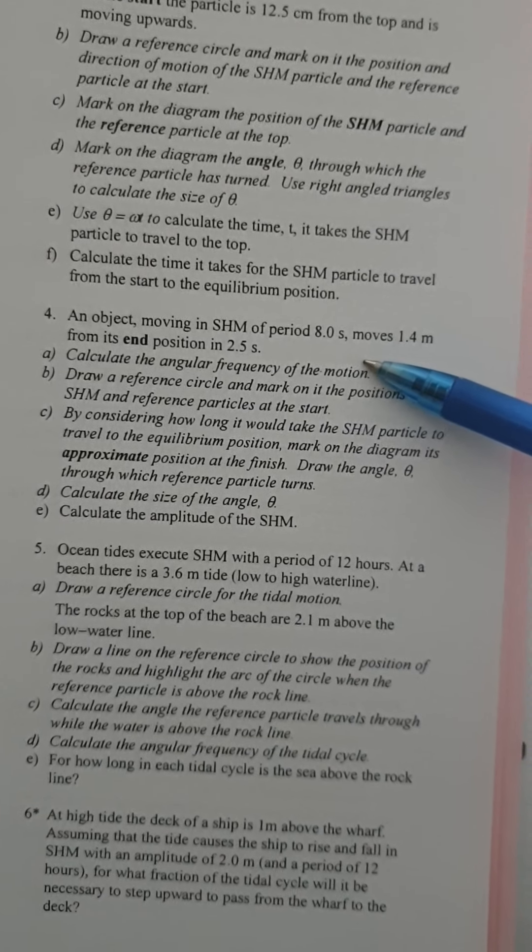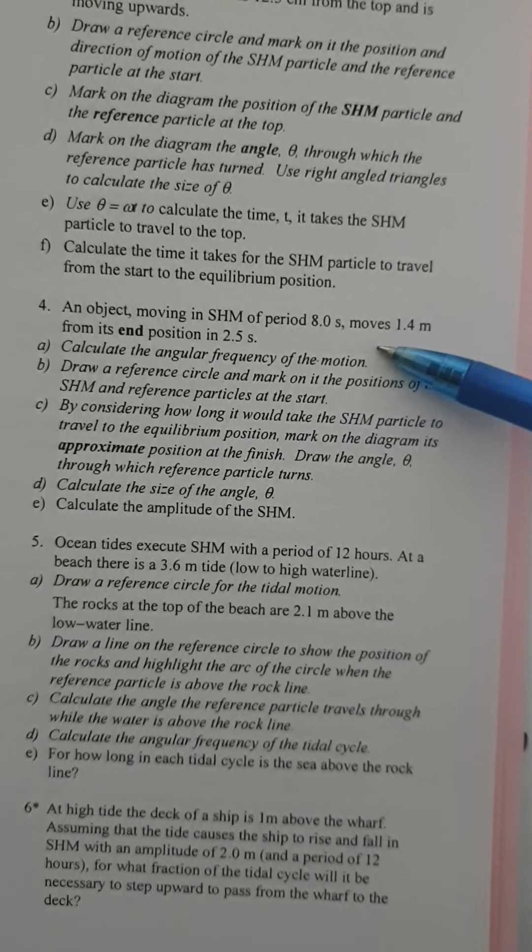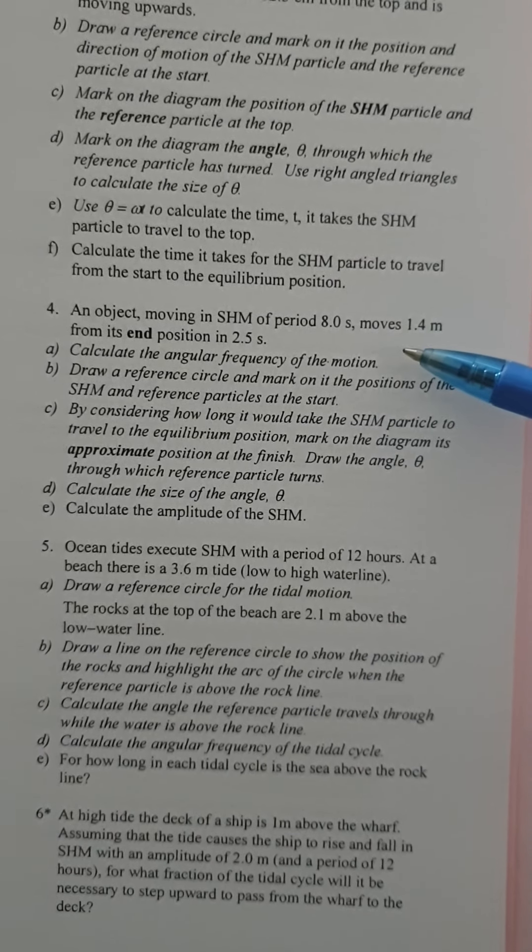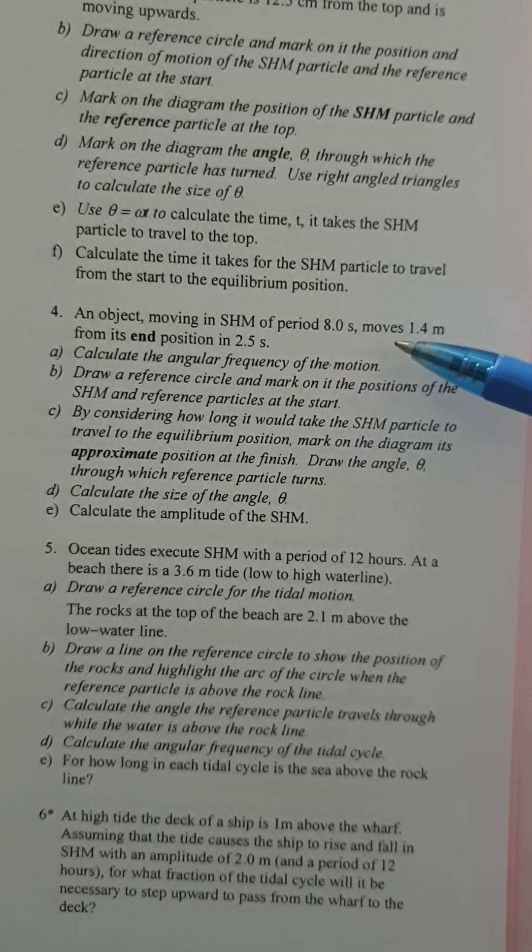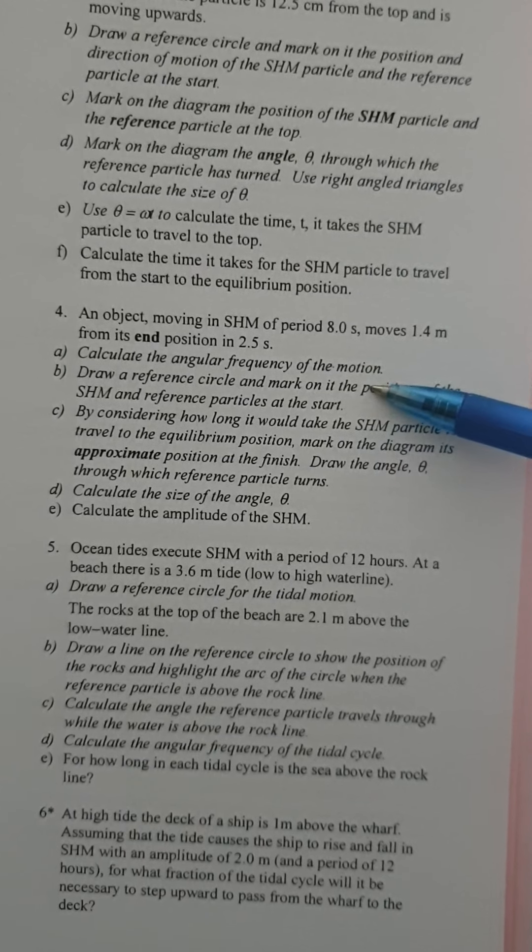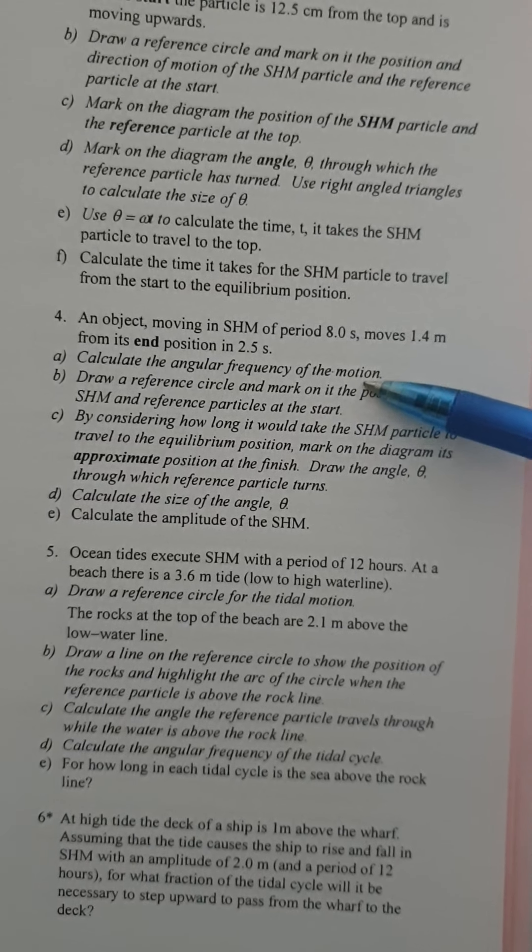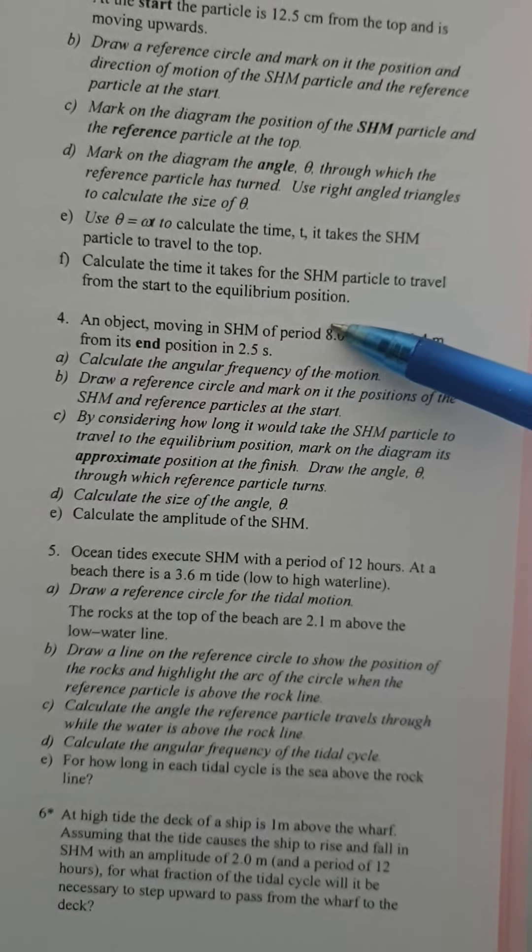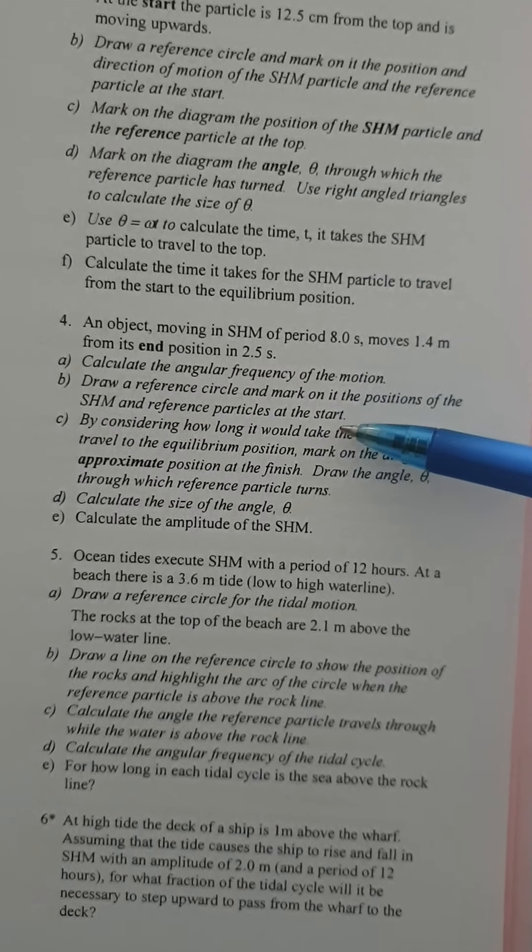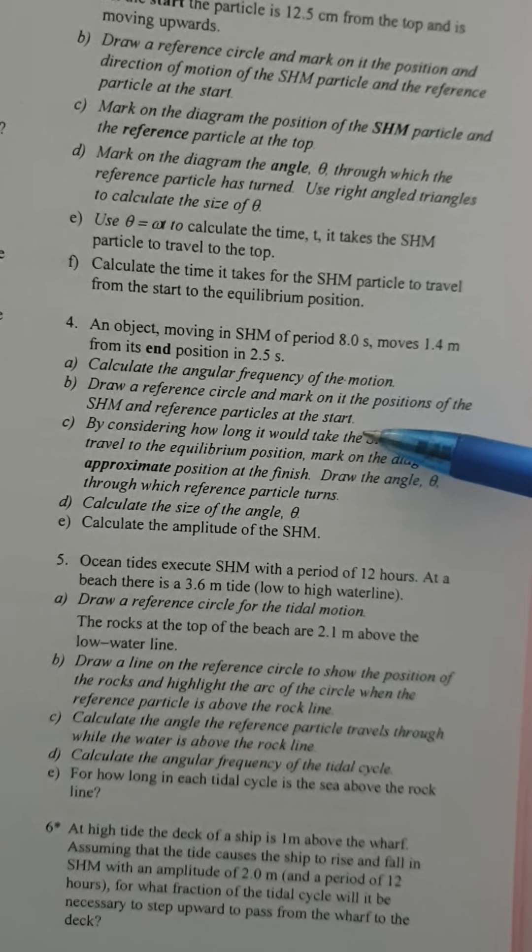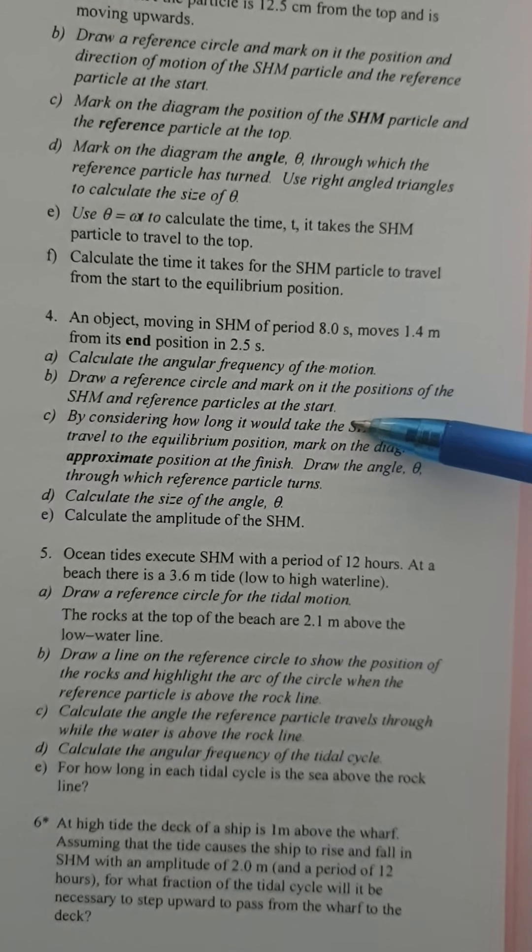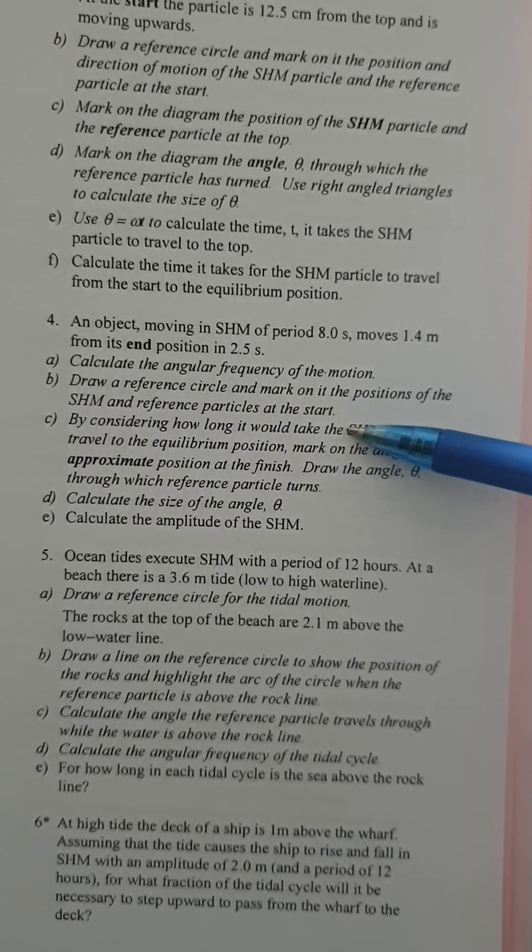So an object moving in simple harmonic motion of period 8 seconds moves 1.4 meters from its end position in 2.5 seconds. The first thing we have to do is calculate the angular frequency and that's quite straightforward. Here's your period which is t so 2π over t will give you angular frequency. Then the next thing we have to do is draw a reference circle and mark on it the positions of the SHM and reference particles at the start.